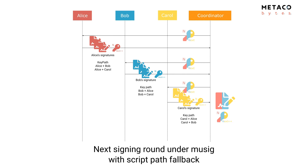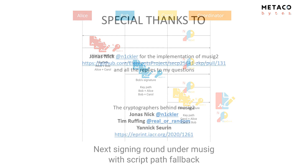That's all for today. I hope you now understand how MuSig differs from other multisig protocols we used before: it's a two-round protocol, but luckily the first round can be pre-computed. I hope you enjoyed it and see you for the next video.